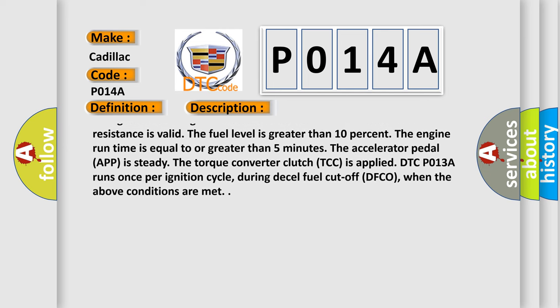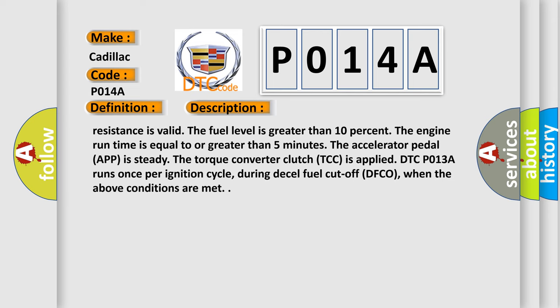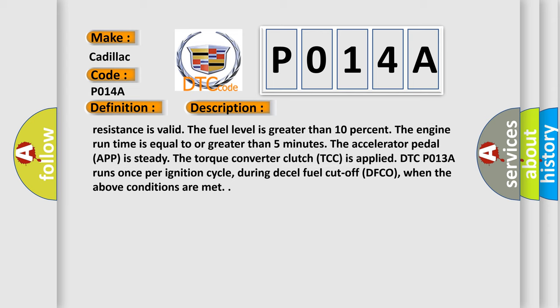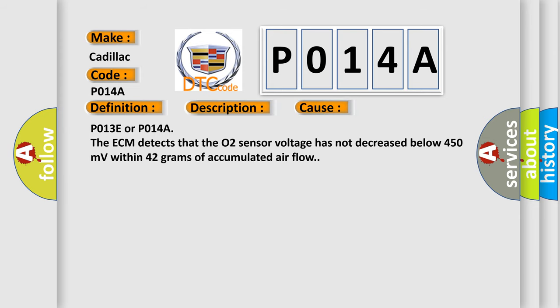Enable conditions include: ignition voltage between 10 to 18 volts, learned heater resistance is valid, fuel level greater than 10%, engine run time equal to or greater than 5 minutes, accelerator pedal position is steady, and the torque converter clutch (TCC) is applied. DTC P013A runs once per ignition cycle during decel fuel cutoff (DFCO). This diagnostic error occurs most often when the ECM detects that the O2 sensor voltage has not decreased below 450 millivolts within 42 grams of accumulated airflow.